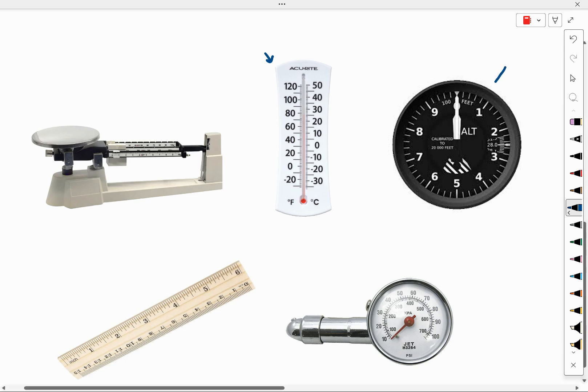The next object says ALT on it. That must be an altimeter used to measure the altitude of something in feet. And then down below that object, this looks like it's measuring in KPA, so that must be a pressure meter. The inside scale is in KPA. The outside scale is in PSI, or pounds per square inch.